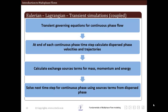First, solve the transient governing equations for continuous phase flow at each cell volume. Then at the end of each continuous phase time step, calculate the dispersed phase velocities and trajectories using Newton's law of motion. Then, based on these velocities and trajectories, calculate the exchange source terms for mass, momentum, and energy for that particular time step.